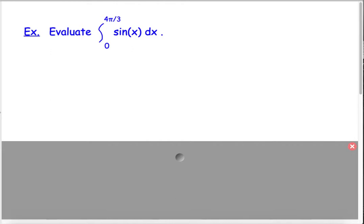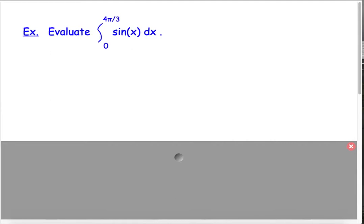So, this is saying evaluate the integral from 0 to 4π over 3 of sine of X dx. Now, one way you can think about this is it's asking what's the area between the sine function and the X axis between 0 and 4π over 3. So, we start off by finding the antiderivative of sine of X, which is the opposite of cosine of X. And then we're going to evaluate that from 0 to 4π over 3.